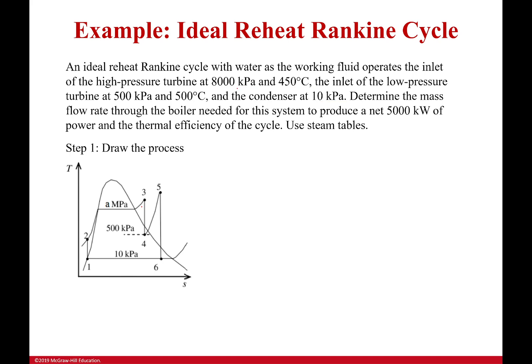So we have 8,000 kilopascals and 450°C going into the high-pressure turbine, and 500 kilopascals and 500°C going into the low-pressure turbine. There's a condenser operating at 10 kilopascals. We want to determine the mass flow rate through the boiler needed for the system to produce a net 5,000 kilowatts of power, as well as the thermal efficiency of the cycle.